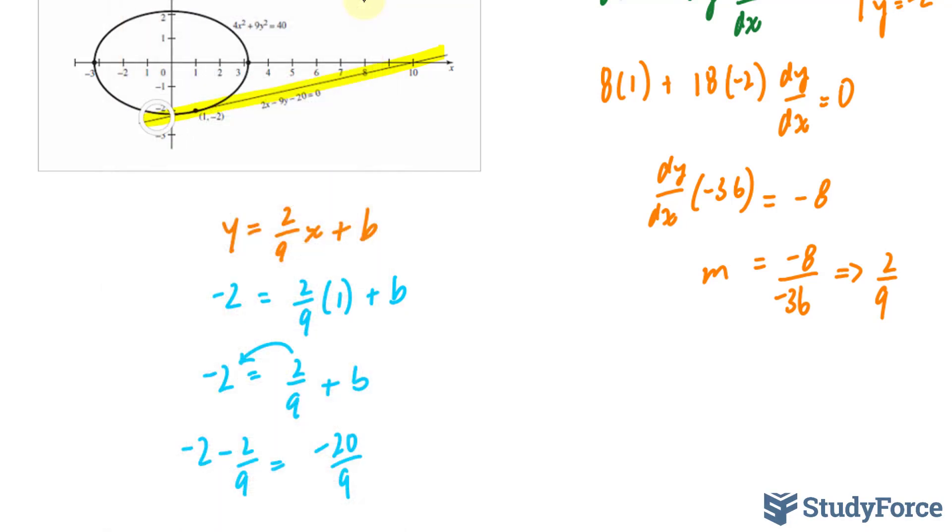And that's what we would expect. Notice negative 2.22 is the y-intercept. I'm going to write down my final equation now. y is equal to 2 over 9x minus 20 over 9.